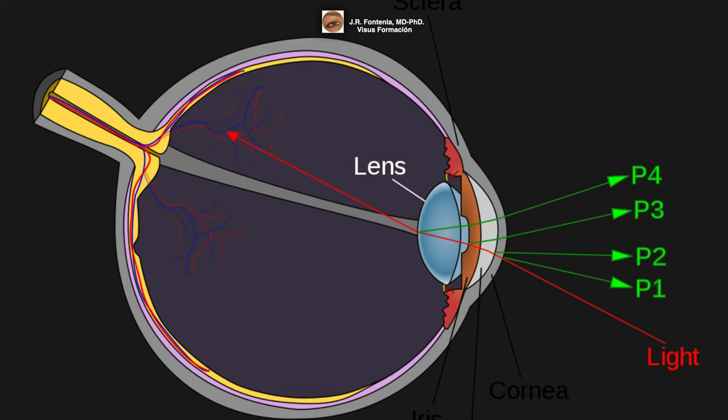Light reflected from the anterior and posterior surfaces of the lens can, in turn, be reflected back into the eye from the posterior surface of the cornea. In this way, the third and fourth Purkinje images can be visible from within the eye itself.